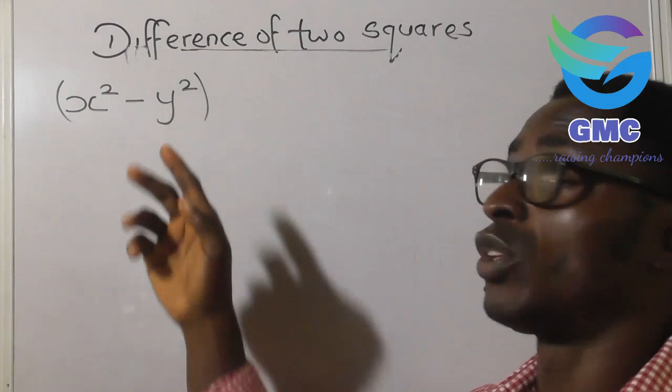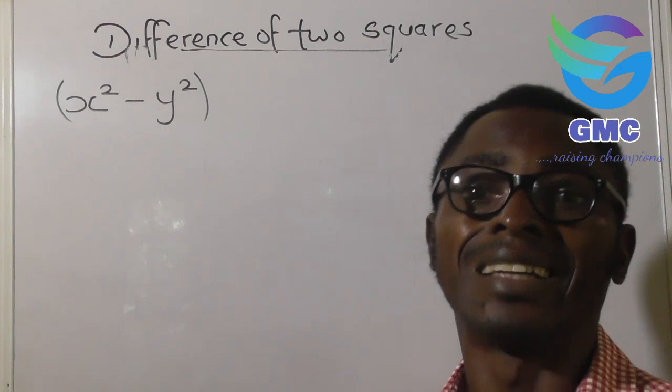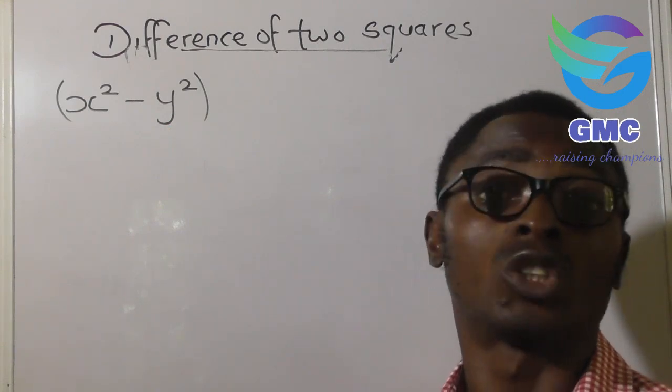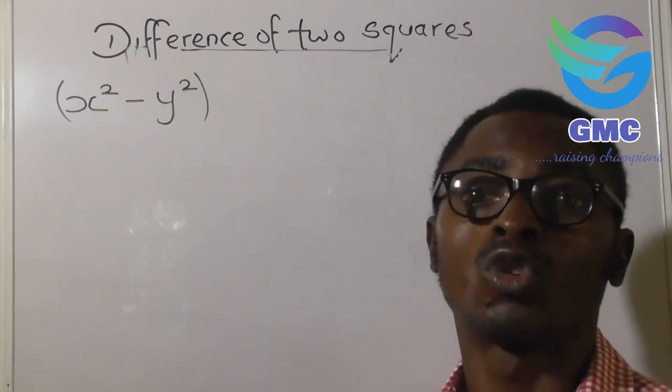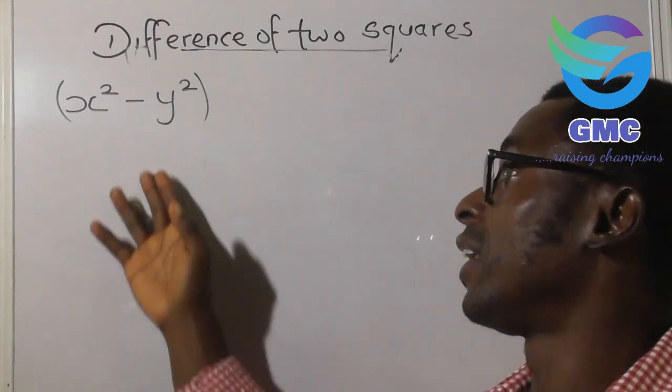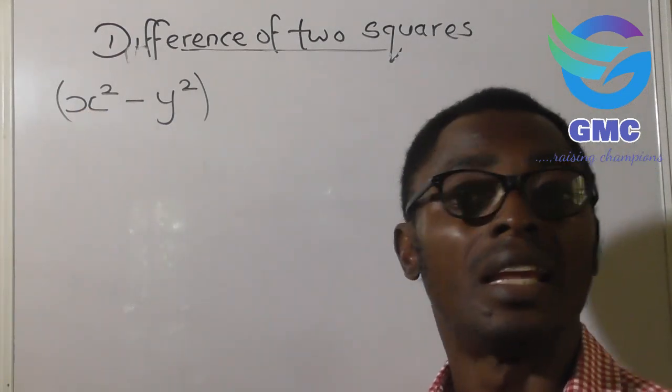Each of the two variables must be such that you can find their square root. That is, they must be perfect squares. And three is that in between the two variables must be a negative sign.